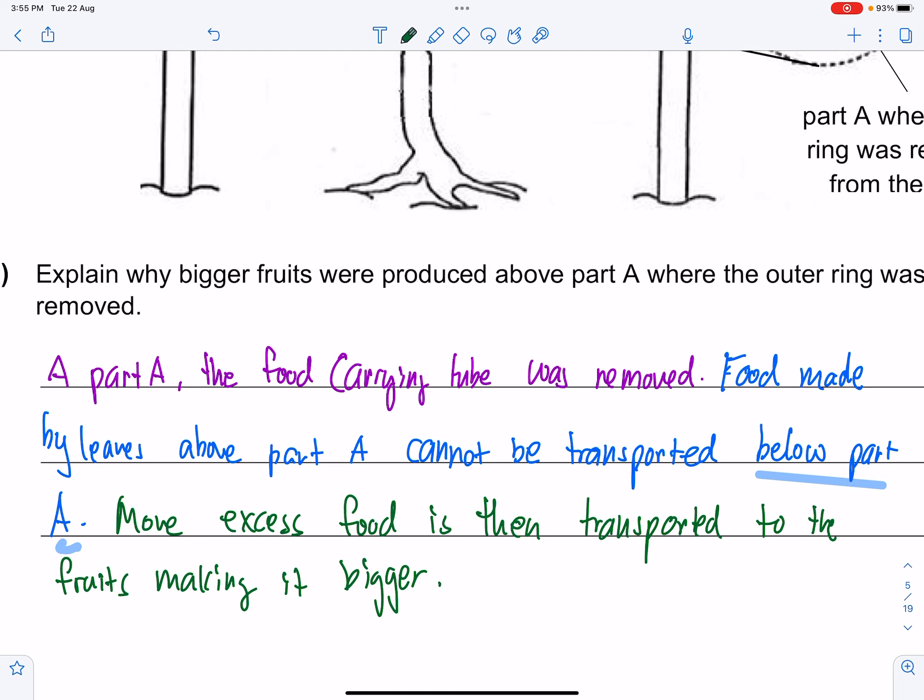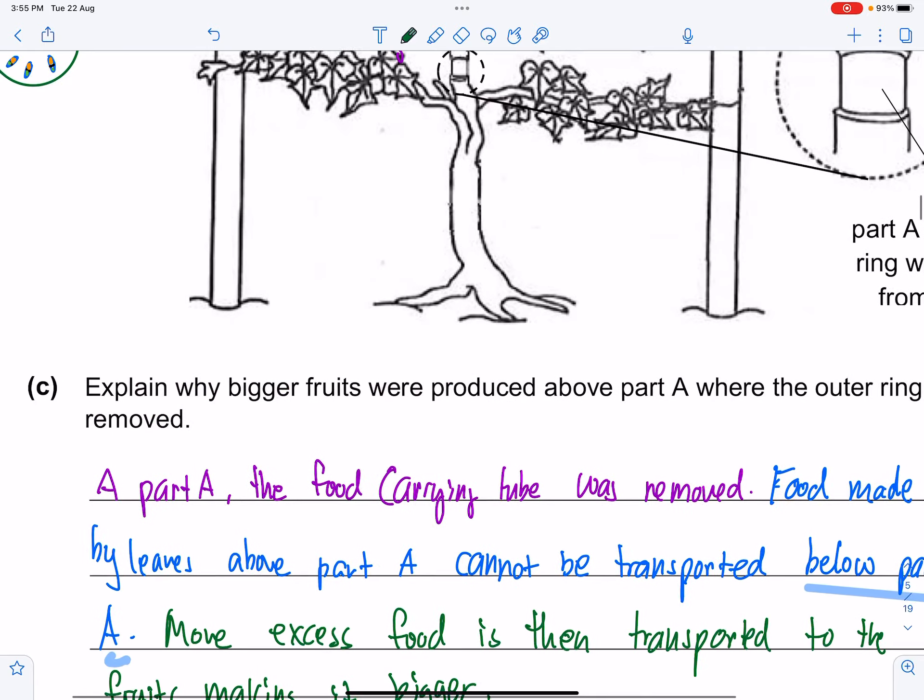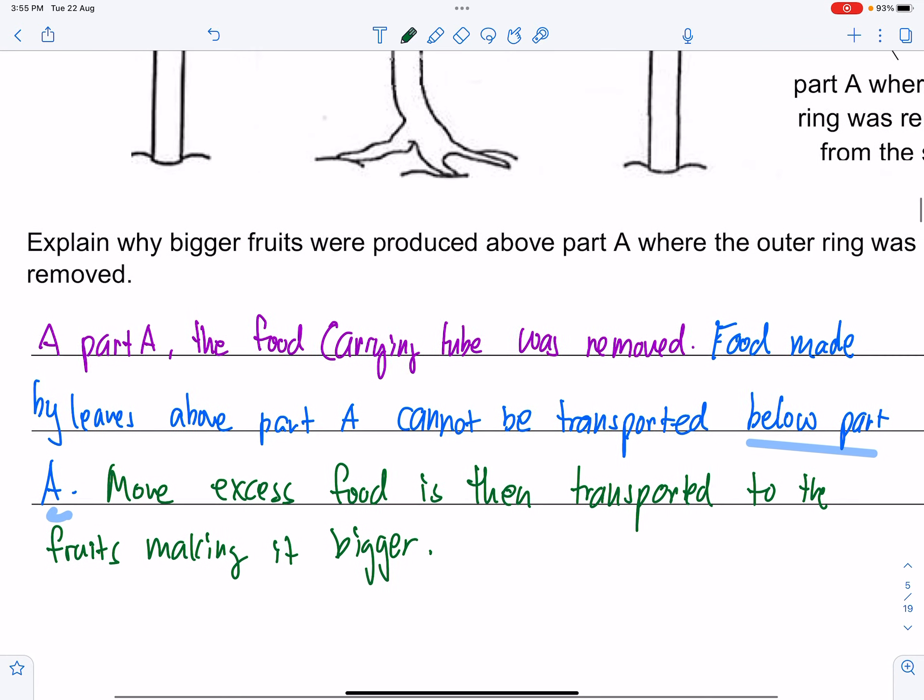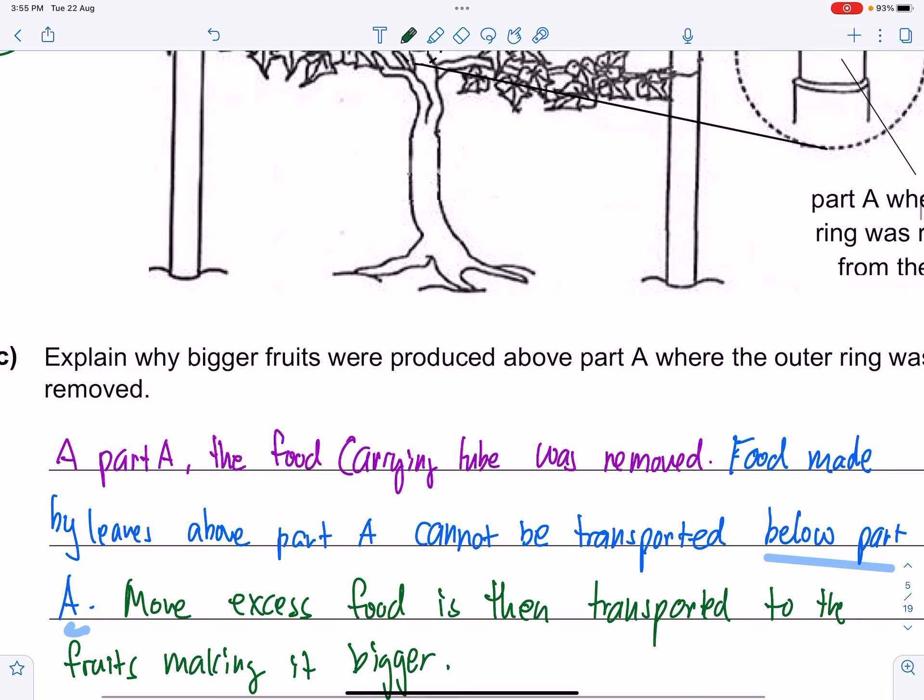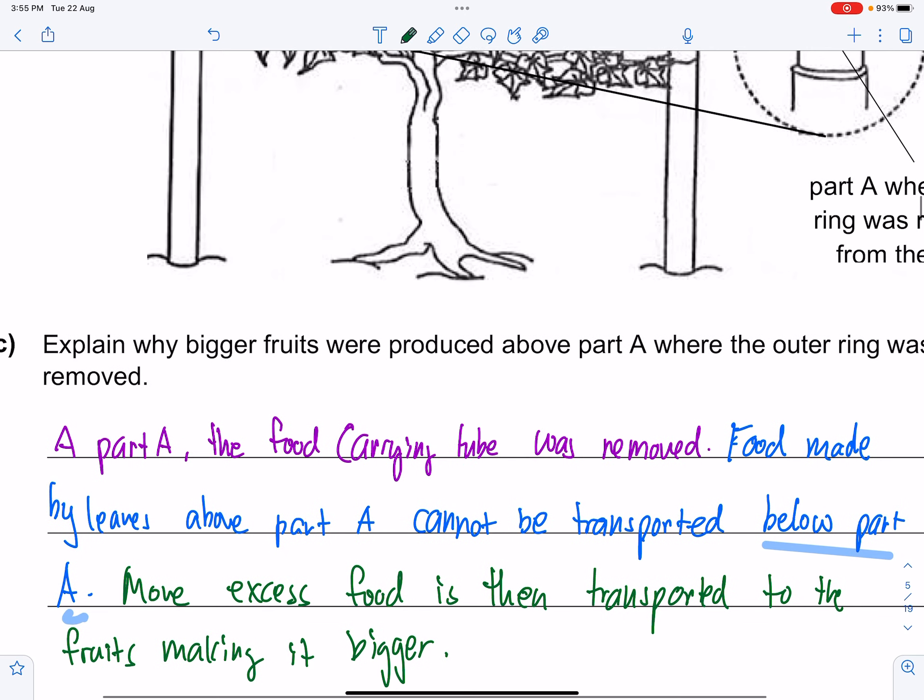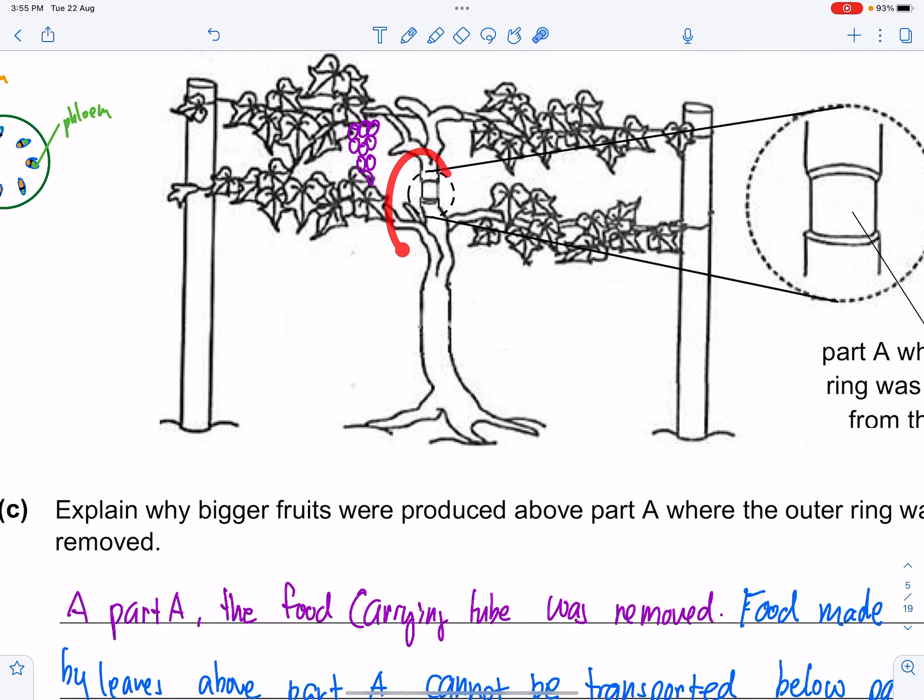Now I'm also going to explain to you what happens if the food carrying tubes were cut not at part A but at a lower part over here. Say we cut it over here at part B. Now when this happens, it is very important to note that the whole plant would die. The whole plant would die. This is very different.